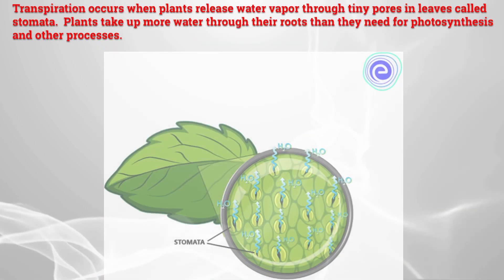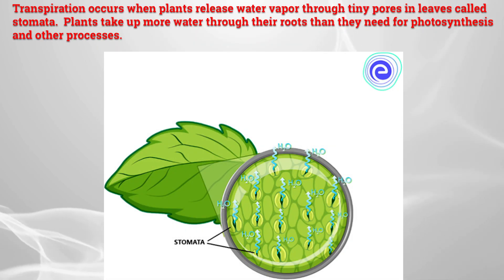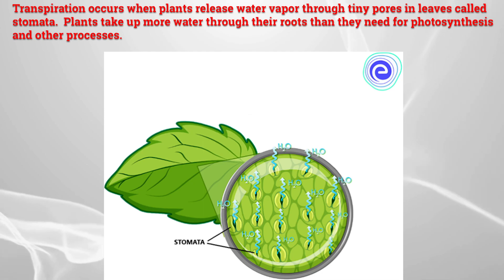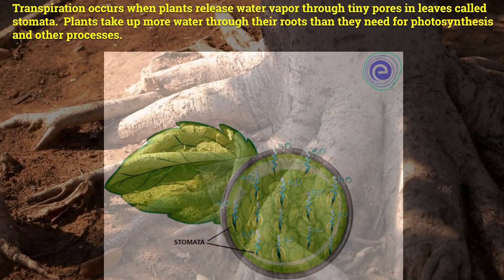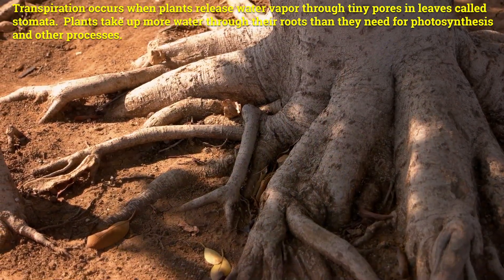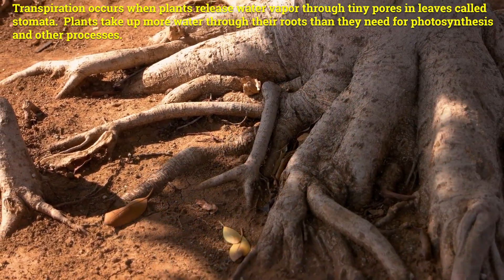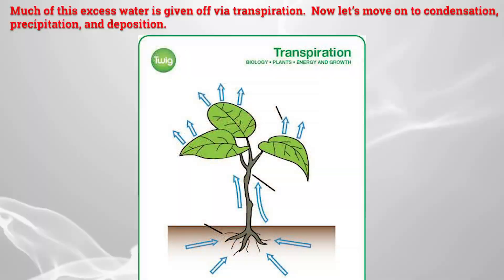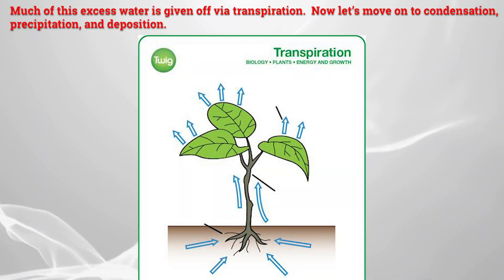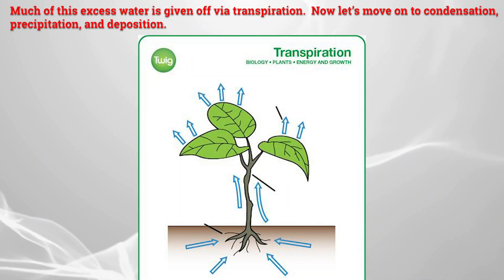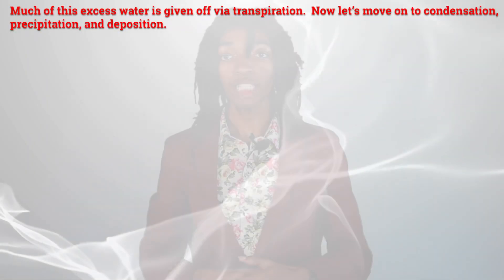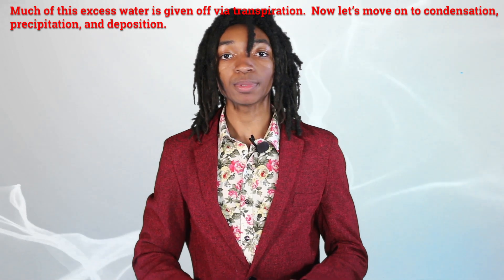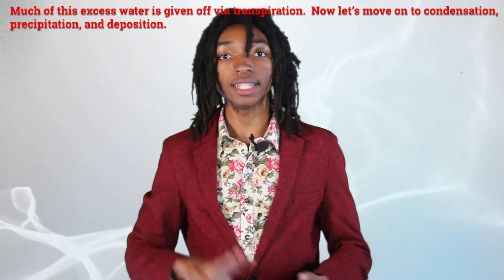Transpiration occurs when plants release water vapor through tiny pores in leaves called stomata. Plants take up more water through their roots than they need for photosynthesis and other processes. Much of this excess water is given off via transpiration. Now let's move on to condensation, precipitation, and deposition.